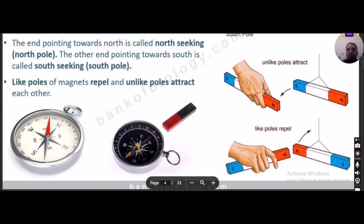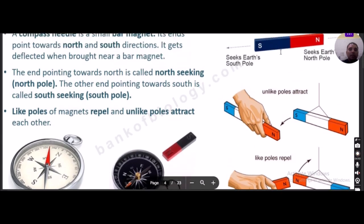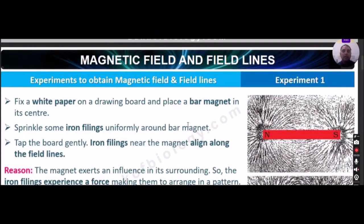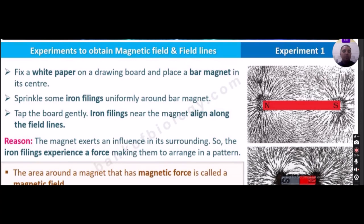If we bring the north pole of one magnet and the north pole of another magnet close together, they will show repulsion. The end pointing towards north is the north-seeking pole, and the other end pointing towards south is the south-seeking pole. Now let us perform Experiment 1 to obtain magnetic field lines: fix a white paper on a drawing board and place the bar magnet at the center.